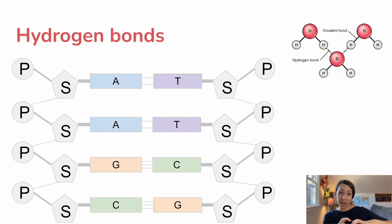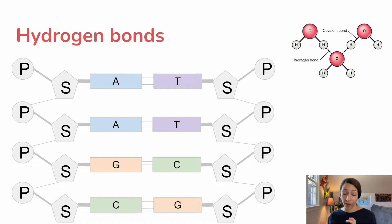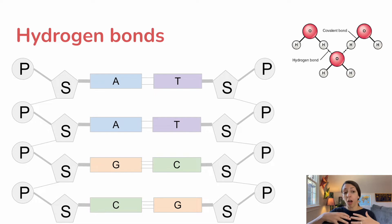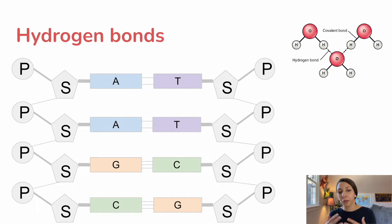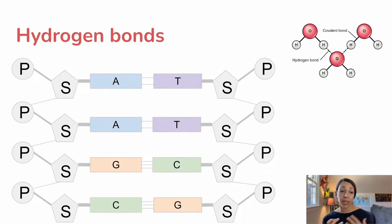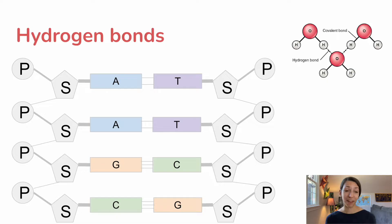Hydrogen bonds are really unique types of connections between molecules, and they're relatively weak compared to ionic and covalent bonds, but they're crucial for maintaining the structure of certain molecules like DNA. In between all of our bases in DNA, we have different numbers of hydrogen bonds. Water can also connect other water molecules through hydrogen bonds. They are weaker because they involve just partial charges, but they're really crucial in lots of different biological molecules — DNA, and the structure of different proteins, which we'll see later on.